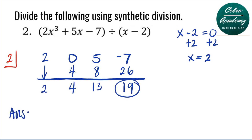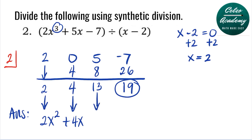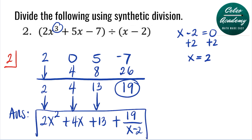How do we write the answer? The highest power of our dividend is 3, so the highest power of our answer is one degree less, which is 2. Our first coefficient is 2, so we write 2x squared. The next coefficient is 4, so we write plus 4x. Next we have plus 13, and the remainder is 19, so we have 19 divided by the divisor x minus 2. So this is the answer for question number 2.